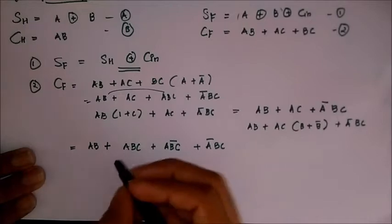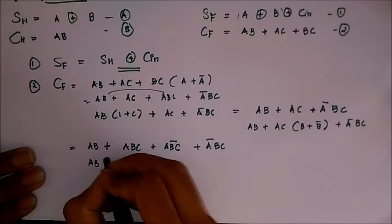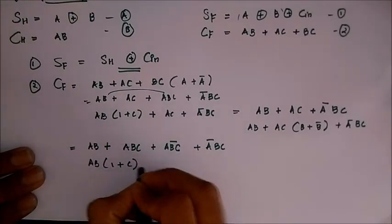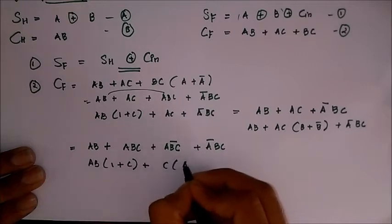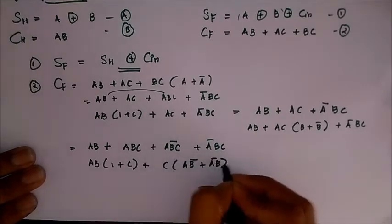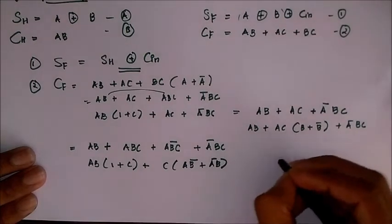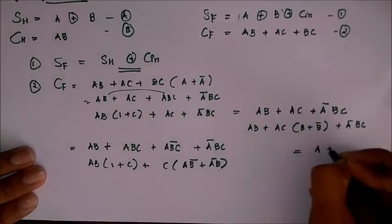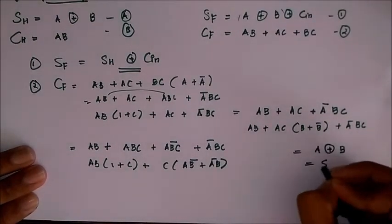So we can take on this AB as common, and 1 plus C, plus C into AB bar plus A bar B. AB bar plus A bar B as A XOR B, which is equal to SH. That is equation A here.